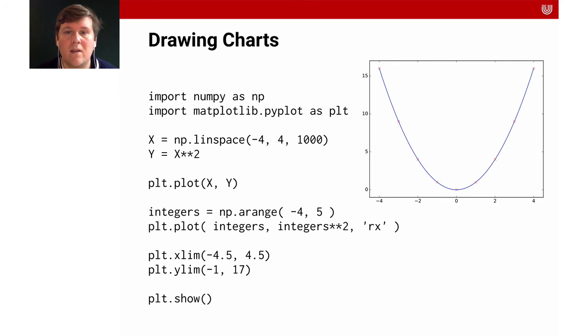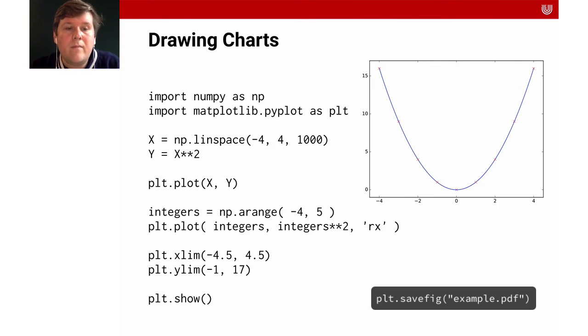This is what it shows you. The first call the blue line is based on the x and y arrays that we defined and the second line is based on the integers and the integers to the power of 2 that we plotted with the extra parameter rx which made the crosses which changed the color to red. We can also use plot.savefig which allows us to save a figure. So if we would add plot.savefig example.pdf we will write a pdf that we then can use in our paper.